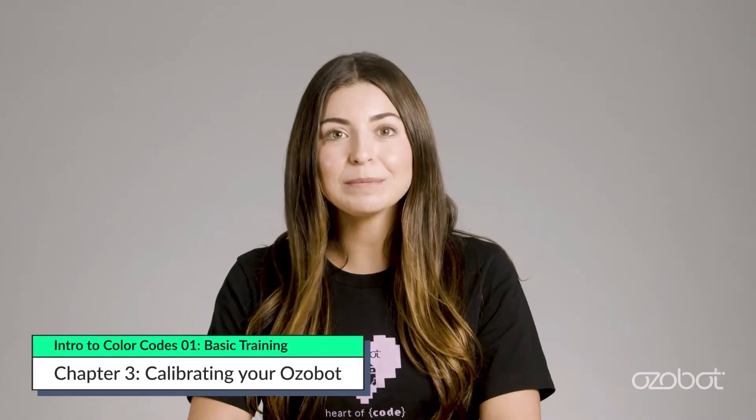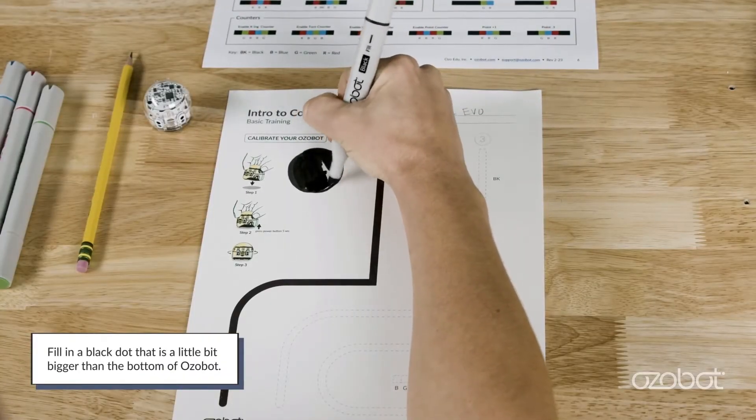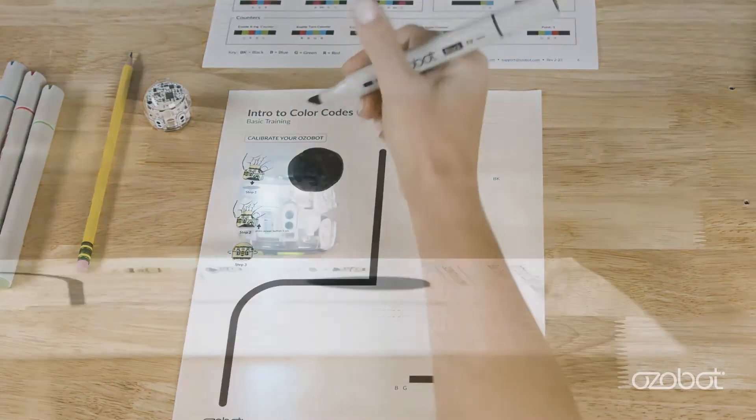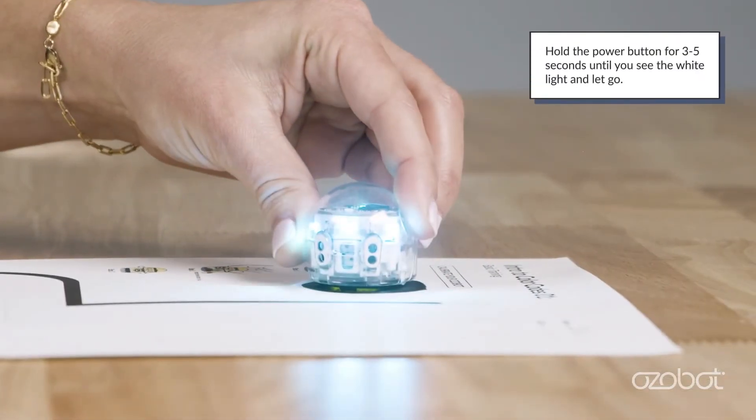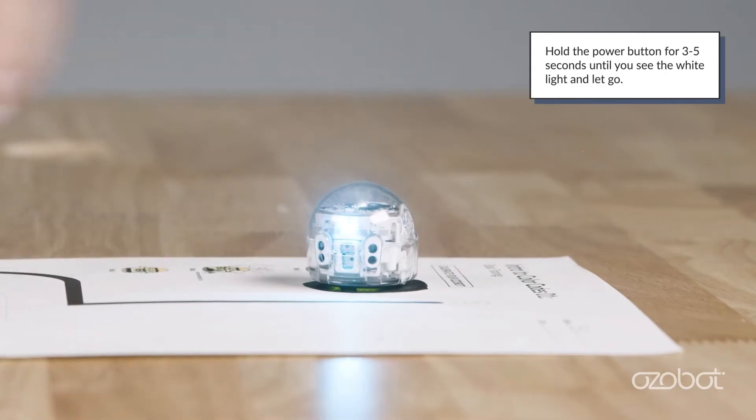Calibrating Ozobot helps the sensors know what kind of light is in the space where you are working. Calibrate Ozobot at the beginning of each session. Time of day and the weather outside could change how Ozobot sensors see the pages you are working on. First, fill in the black dot that is a little bigger than the bottom of Ozobot. Next, place the bot on top of the black dot and hold down the power button for 3 to 5 seconds, or until the top LED flashes white, then release the power button.